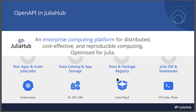JuliaHub, as you may already know, is an enterprise computing platform for running large Julia applications and batch jobs at scale, both on-premises and in the cloud. It includes Julia IDEs and notebooks, private package servers, data cataloging, and collaboration features. You can visit juliaHub.com to learn more. Because of the nature of the JuliaHub product, we use OpenAPI quite extensively both internally and for external integrations.